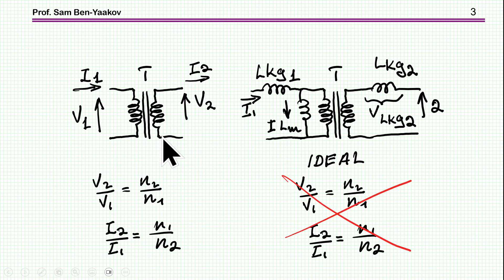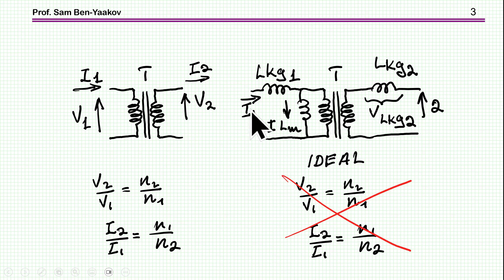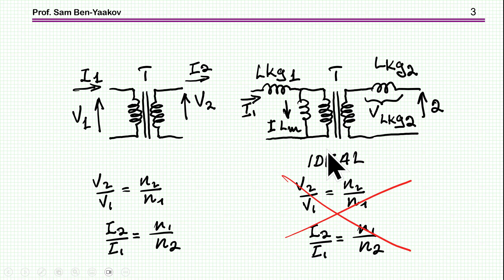Since a transformer is used for isolation, one would think you can use the turns ratio relationship between input current and output current, or input voltage and output voltage. However, this is incorrect for a practical transformer — especially in an LLC. In a practical transformer, you have a current through the magnetization inductance which is not transferred to the output, and a voltage drop due to the leakages. So the relationship deviates quite a bit, and in an LLC it can be appreciable.